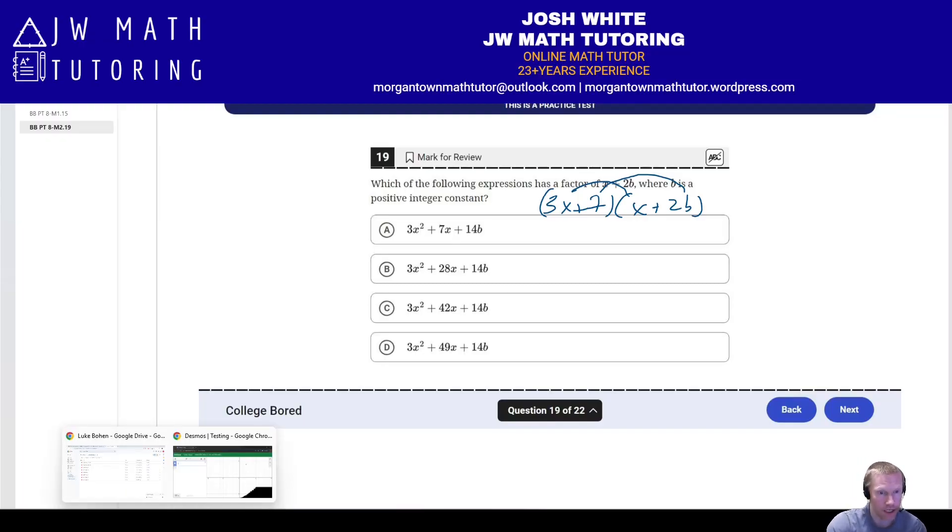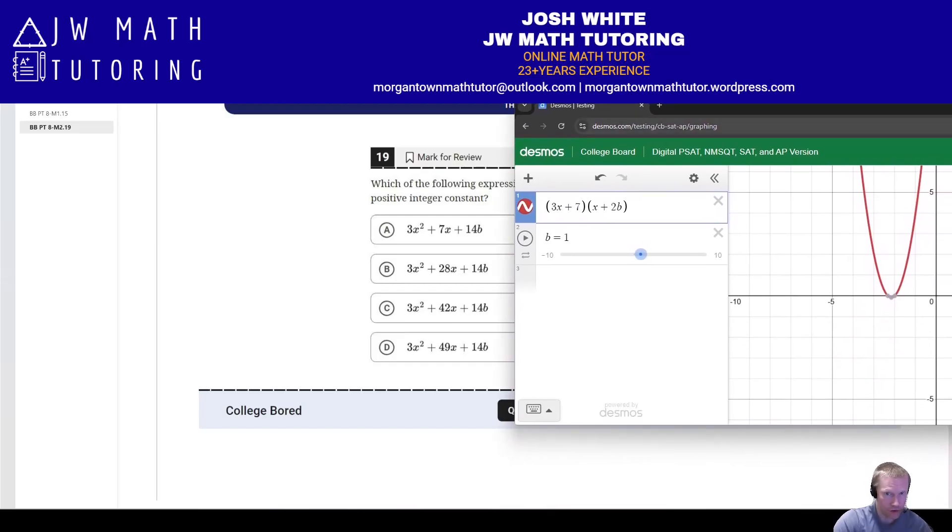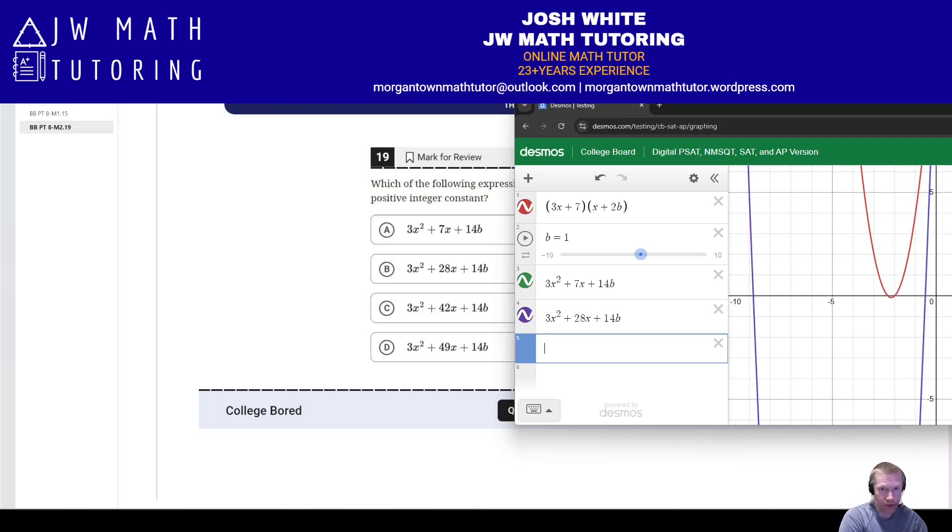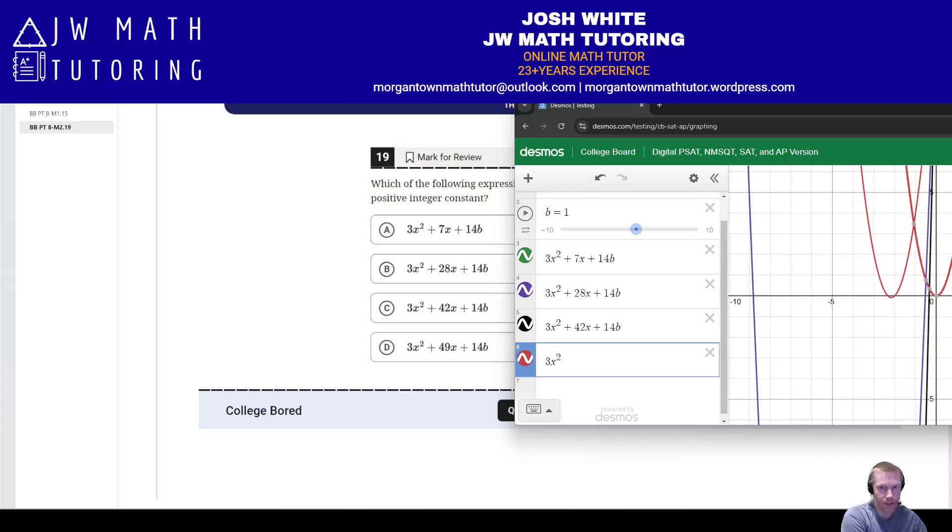All right. So what I'm going to do is I'm going to write the factored form now. I'm going to add a slider for B. Then I'm going to graph each of the answer choices. And essentially what I'm going to do then is move the slider until I match one of these four answer choices. Now it takes a little time to type them in, but it's not too bad. And if I wanted to, I could technically just really click on each one and copy and paste it down to the next line and then just change the middle term, but whatever.